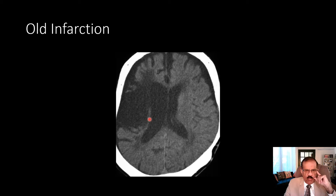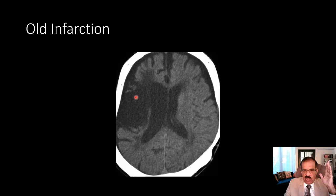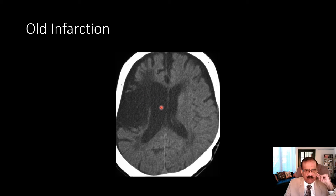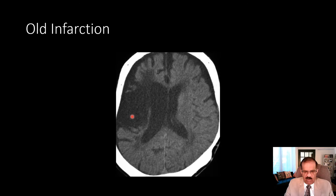This is an old infarction. What happens in old infarction is that brain tissue becomes liquefied — the intensity is equivalent to that of CSF. Initially there is no change in volume, then gain of volume, and eventually loss of volume, meaning it provides more space for the ventricles to expand. The right-sided ventricle is bigger than the left, expanded because it is pulled to that side. The brain is shrunken — this patient may also have background cerebral atrophy. This is an old large infarction in the vicinity of the right middle cerebral artery.